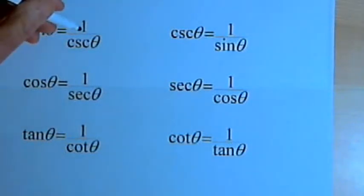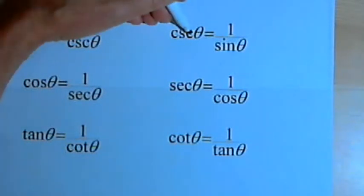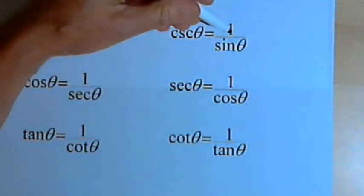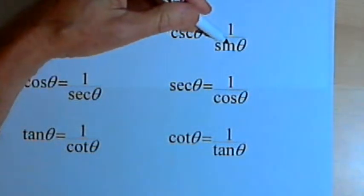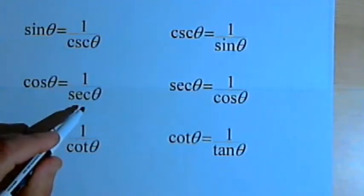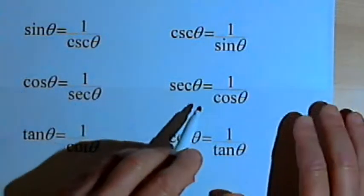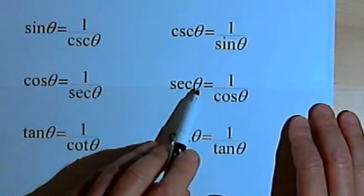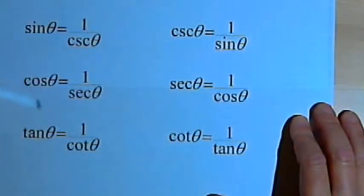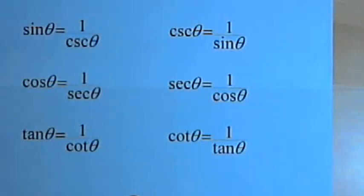The sine of theta equals 1 over the cosecant of theta, and then, kind of like a pair to that, the cosecant of theta equals 1 over the sine of theta. The cosine of theta equals 1 over the secant of theta, and the secant of theta equals 1 over the cosine of theta. The same thing applies for the tangent and cotangent. Now let's take these identities and solve some basic problems.